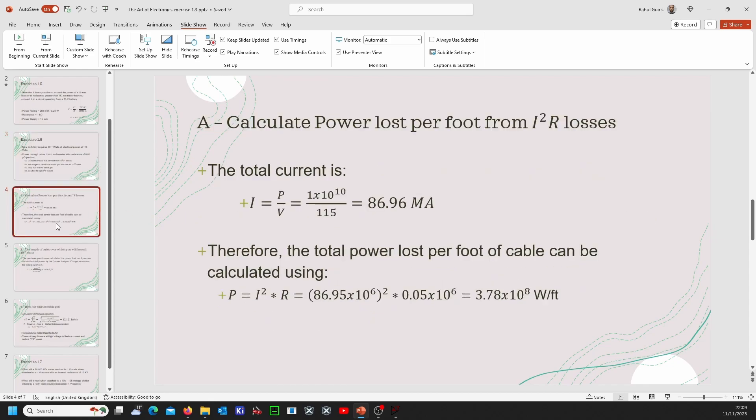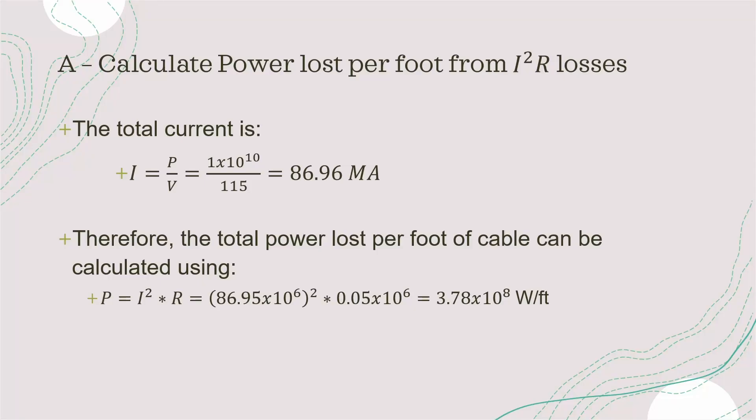Makes our job a little bit easier. We can basically use the power equation P equals VI to calculate the current that is going through the cable and this will allow us to use the I squared R equation to calculate the power lost.